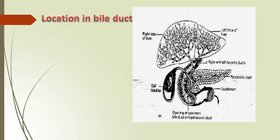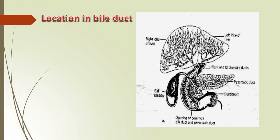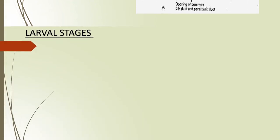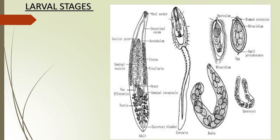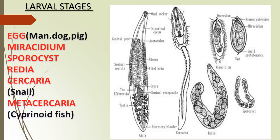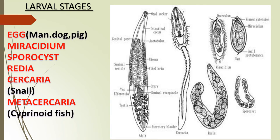A bile duct diagram shows the location of the bile duct, pancreatic duct, duodenum, gallbladder and the opening of the bile duct. As is common in trematodes, Clonorchis sinensis forms many larval stages, which can be seen in the diagram.